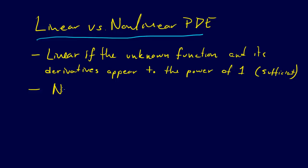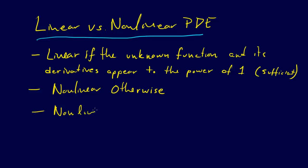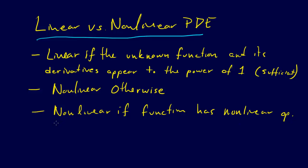It is nonlinear otherwise. There's another condition we could state: nonlinear if the unknown function has a nonlinear operator applied to it. So if we have, for example, the sine of U, that's a nonlinear operator, and that would be a case of nonlinear.